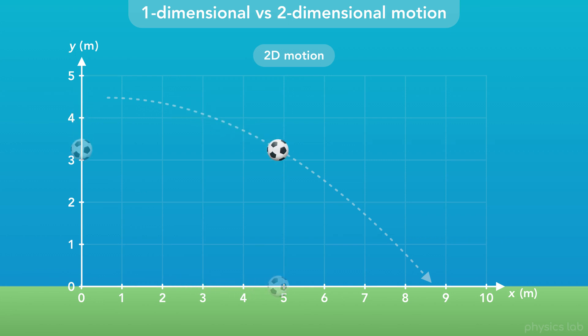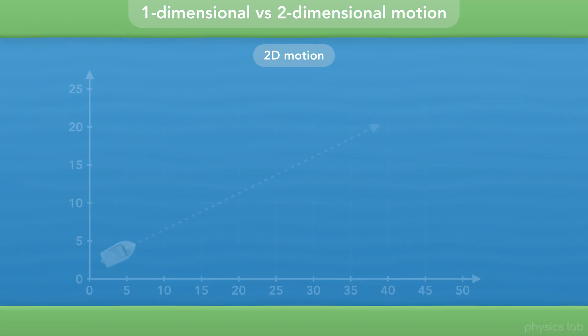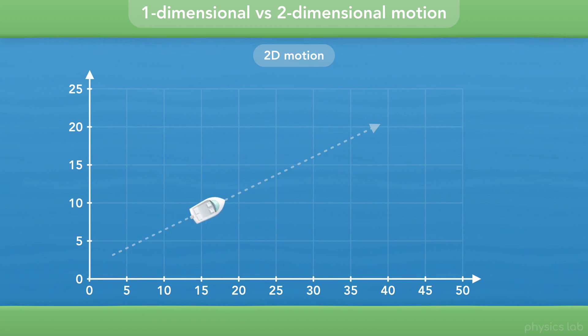But 2D motion doesn't have to be a combination of horizontal and vertical motion. This boat crossing a river is an example of 2D motion on a horizontal plane.